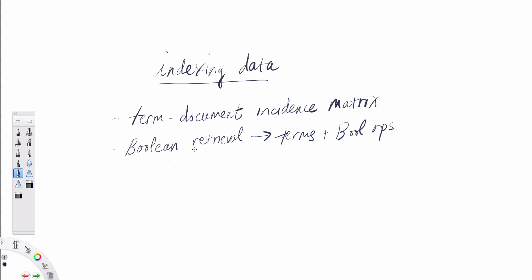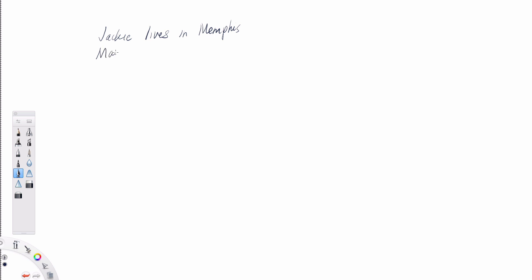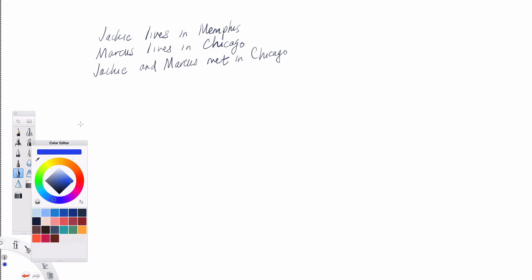One of the ways we can support a Boolean retrieval model search is by building a term-document incidence matrix. Let's look at a simple example. Say we have three documents: the first is 'Jackie lives in Memphis', the second is 'Marcus lives in Chicago', and the third is 'Jackie and Marcus met in Chicago'. So we have three documents, and we're going to label them with document IDs: one, two, and three.